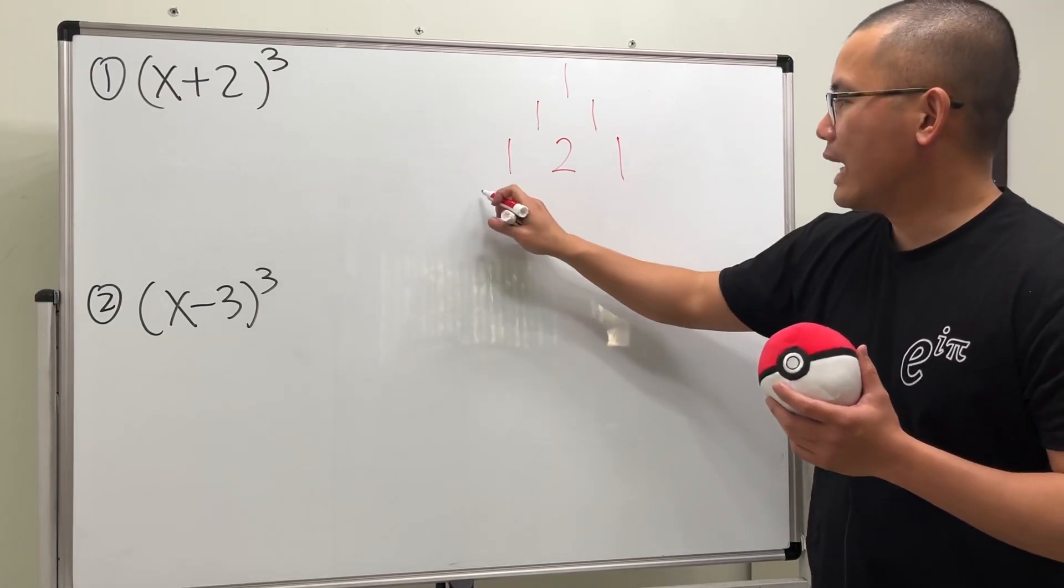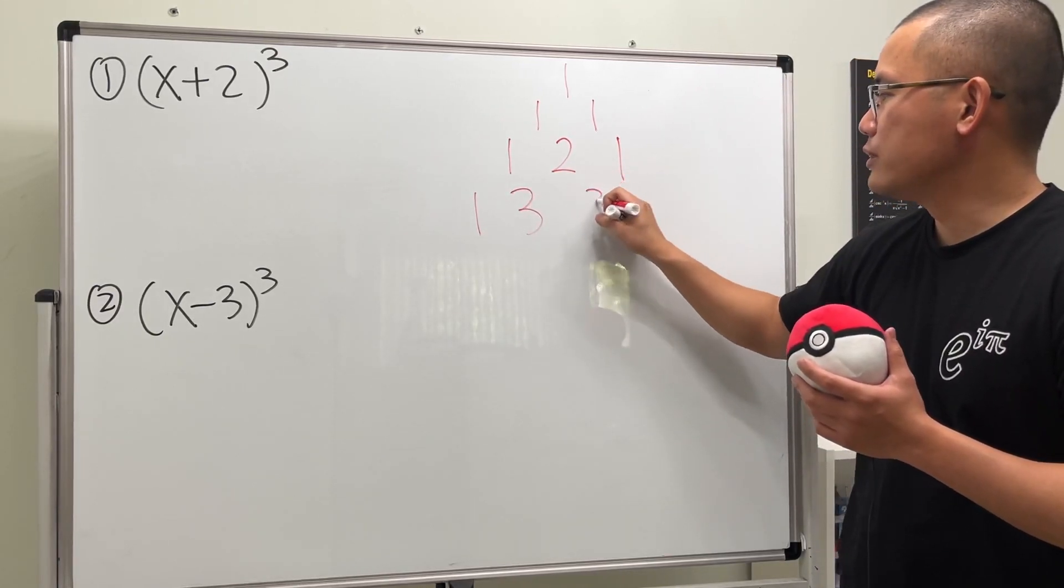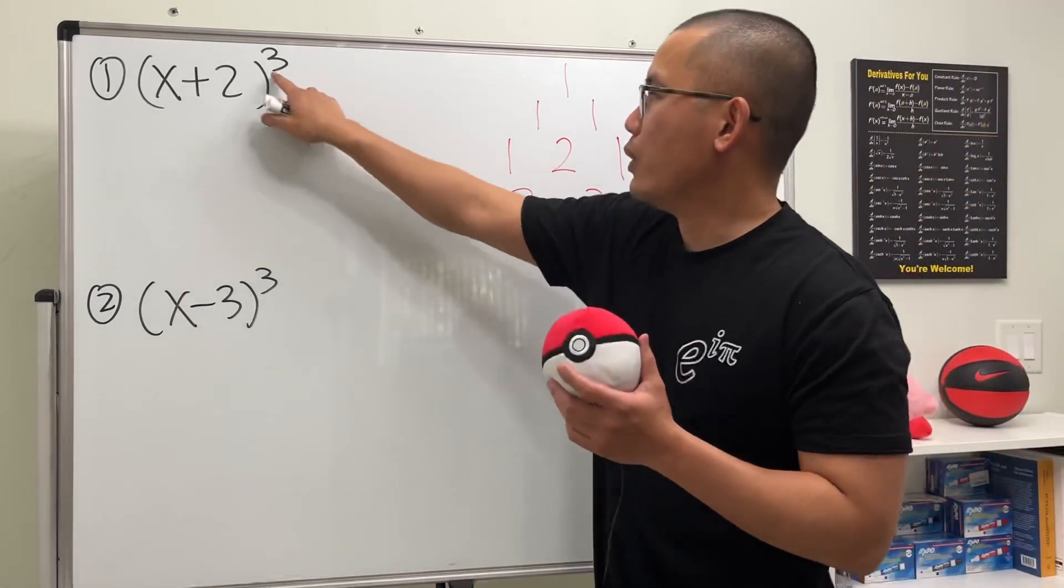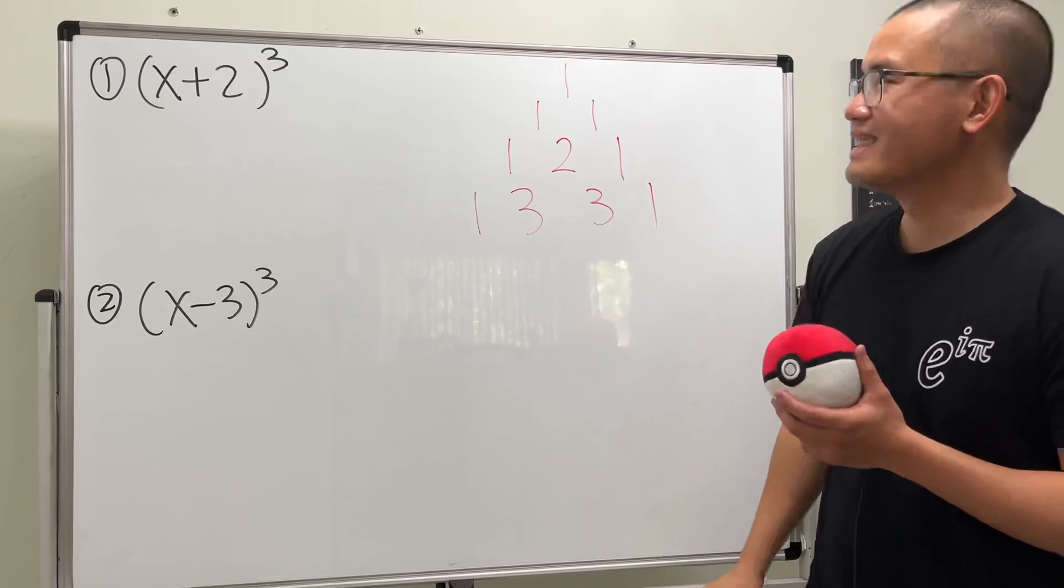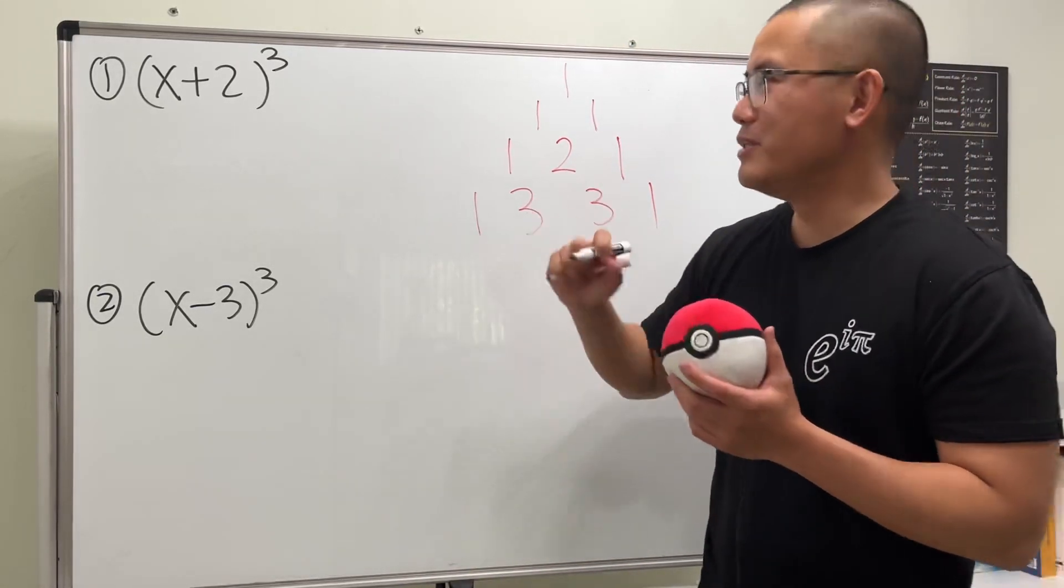And we will have again one, and then we do this plus that which is three, this plus that which is three, and then just one. One easy way to remember is when you have three you want to see the three right here.